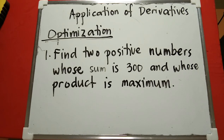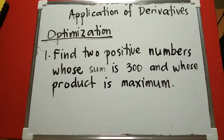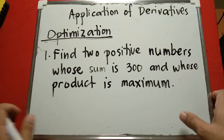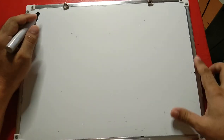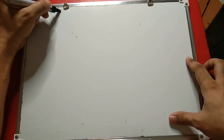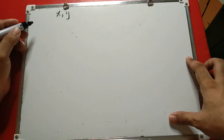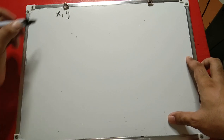Example one: Find the two positive numbers whose sum is 300 and whose product is maximum. The first step is to write down equations describing this situation. Let's call the two numbers x and y.